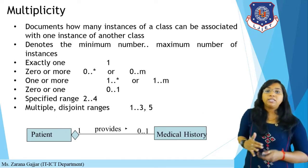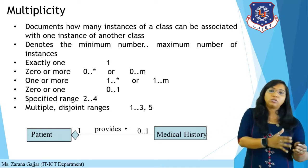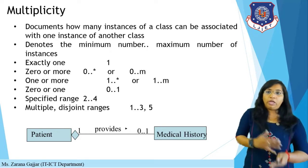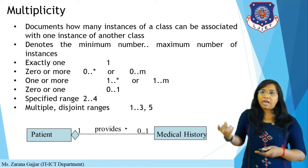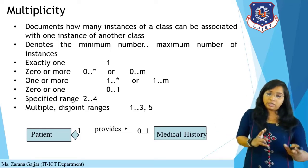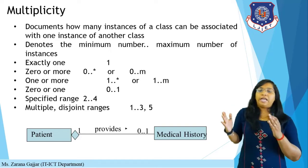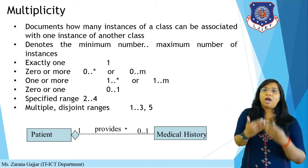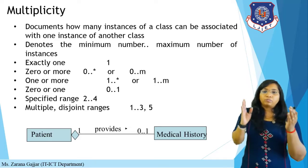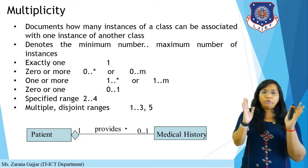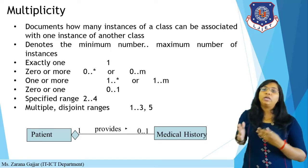Next is multiplicity. Multiplicity documents how many instances of a class can be associated with one instance of another class. It denotes the minimum and maximum number of instances. For example, I am a teacher and I am teaching many students — that is a one-to-many relationship. From the students' perspective, many students have a single teacher — that is many-to-one.